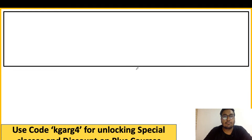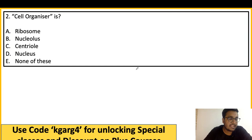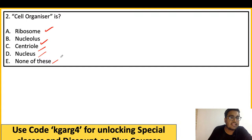Next question from IBPS AFO 2012: Which of the following is also known as a cell organizer? Options are: A) Ribosome, B) Nucleolus, C) Centriole, D) Nucleus, E) None of these.